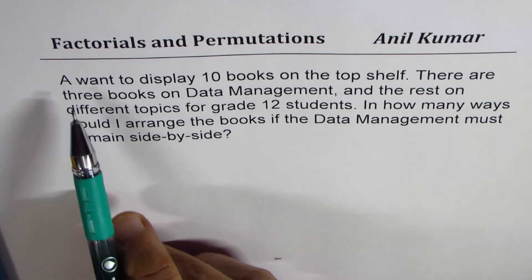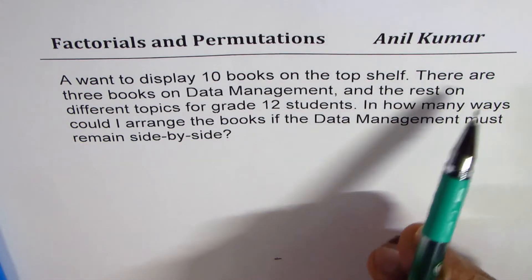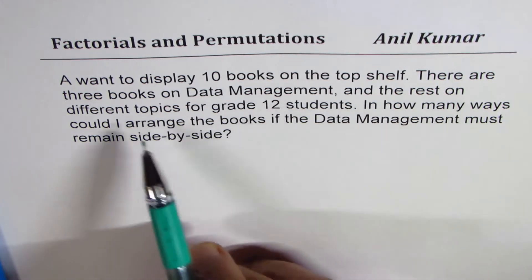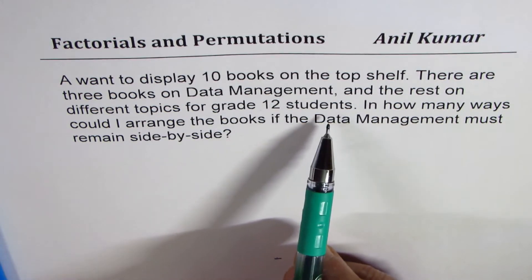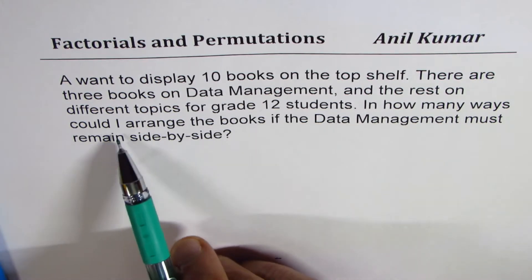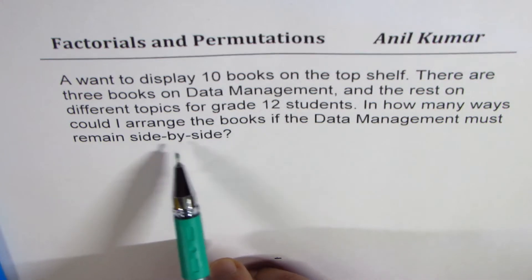The question here is, I want to display 10 books on the top shelf. There are three books of data management and the rest on different topics for grade 12 students. In how many ways could I arrange the books if data management must remain side by side?